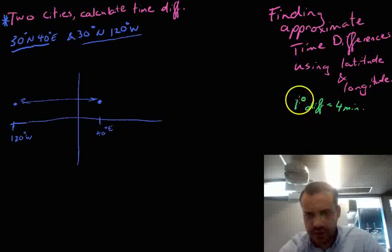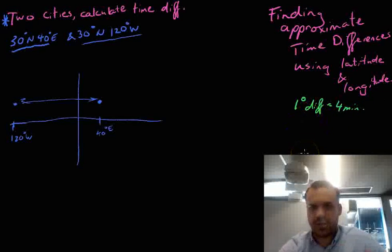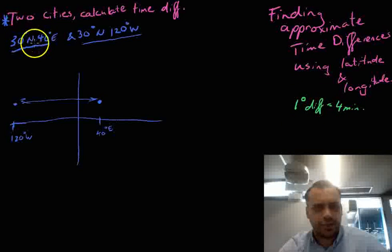If two cities are one degree apart, their time difference will be four minutes. That only works once you start dealing with larger things because of the time zone. Okay, so let's look at this one.